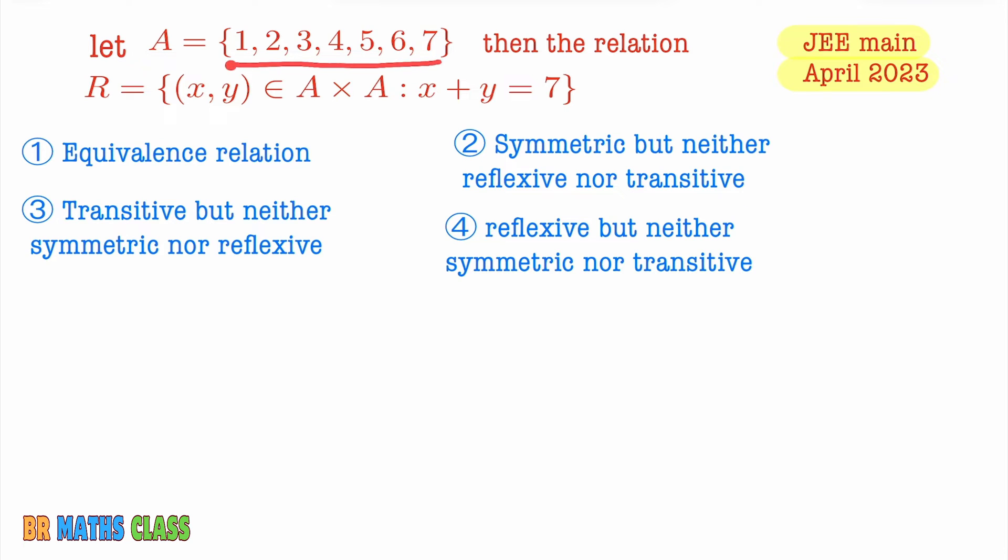You observe they given one set A and they are saying that there is a relation R such that ordered pair (x,y) belongs to A cross A. This tells you that R is a relation on A because it is a subset of A cross A, and this ordered pair satisfies this condition.